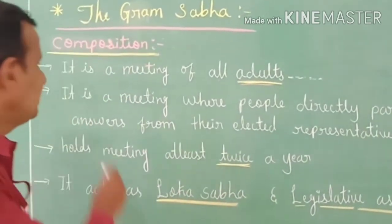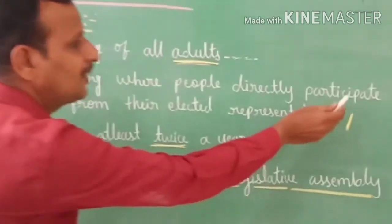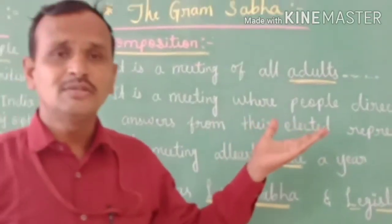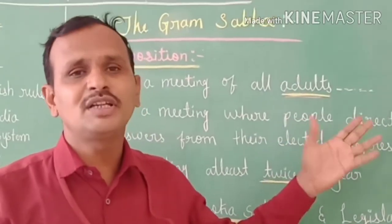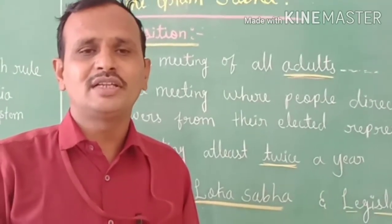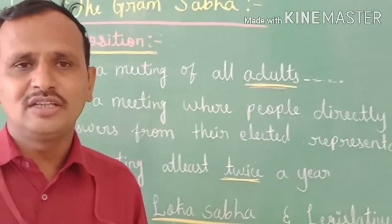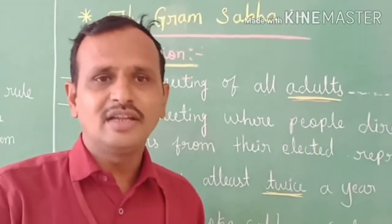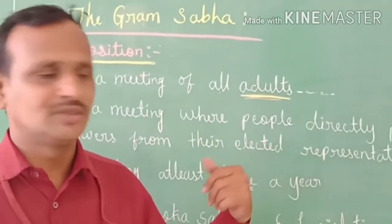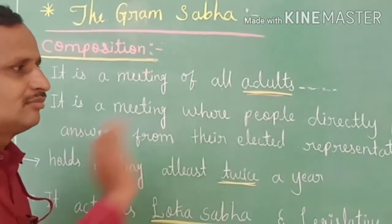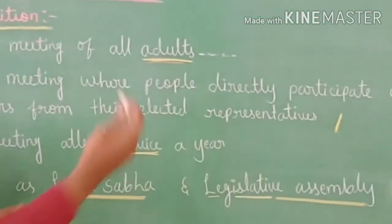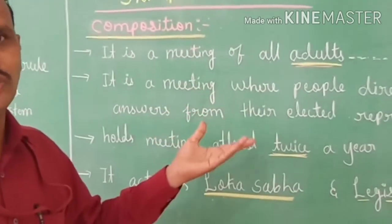The Gram Sabha is a meeting where people directly participate and seek answers from their elected representatives. Because people elected the representatives, they can directly participate in the meeting with their representatives and solve their issues — whether land issues, water issues, electricity issues, or any other issue. They enter the meeting and solve their problems together with their elected representatives.